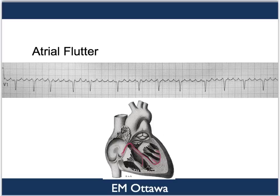Atrial flutter is quite similar to atrial fibrillation. The only difference is that in atrial flutter, the impulses are generated from the atrium at a fixed rate of 300. As with atrial fibrillation, because the impulses do not generate from the SA node, there will be no P waves. Because it is higher than the AV node, the QRS is narrow.